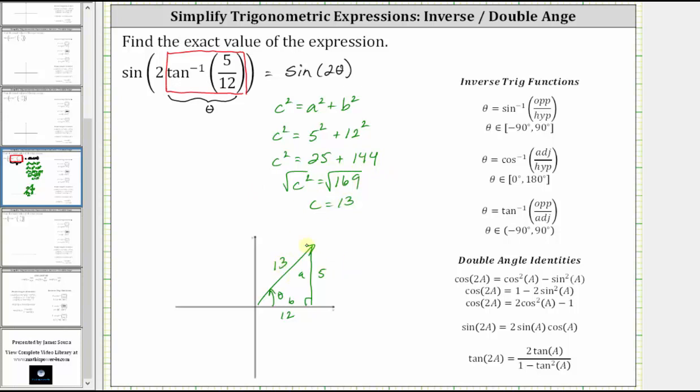Now that we have the completed reference triangle, we can now evaluate sine two theta using the double angle identity for sine. Notice sine two A is equal to two times sine A times cosine A.